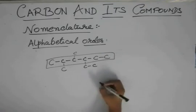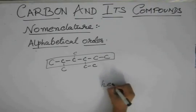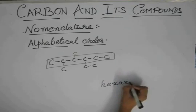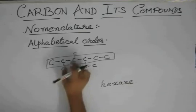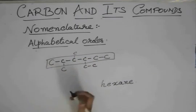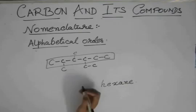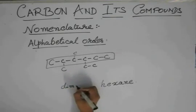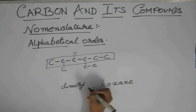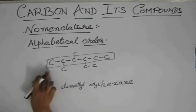So we get a hexane and there are two methyl groups. So according to the alphabetical order, it should be, I mean not according to the alphabetical order. We have dimethyl and ethyl.